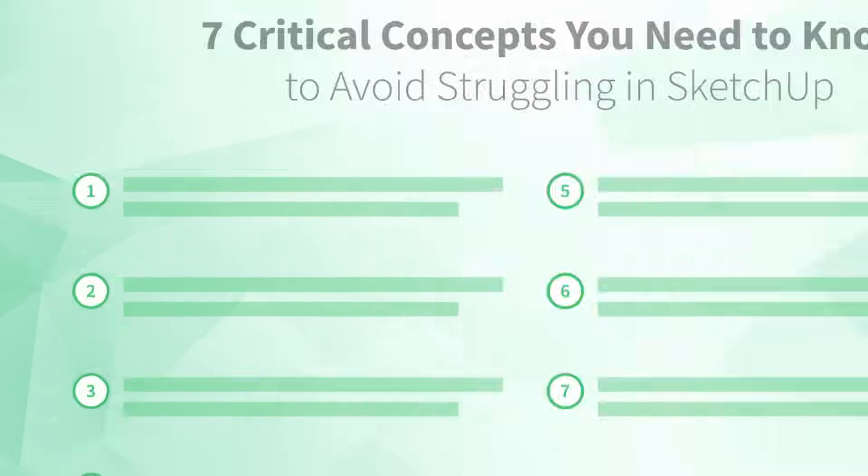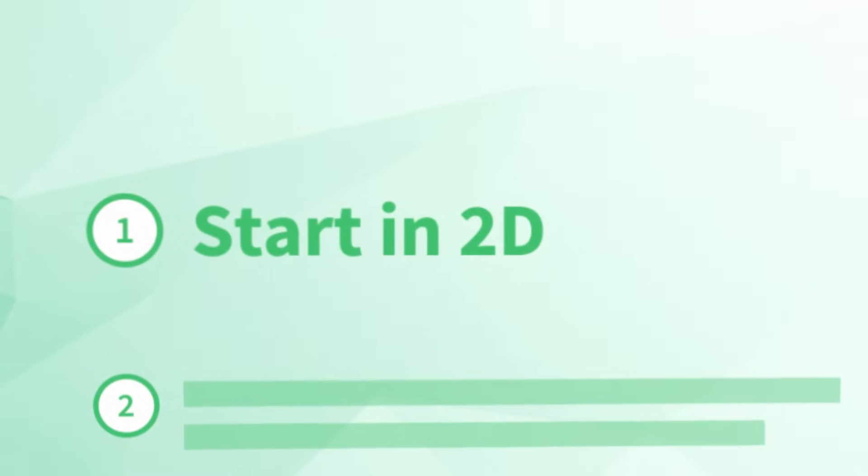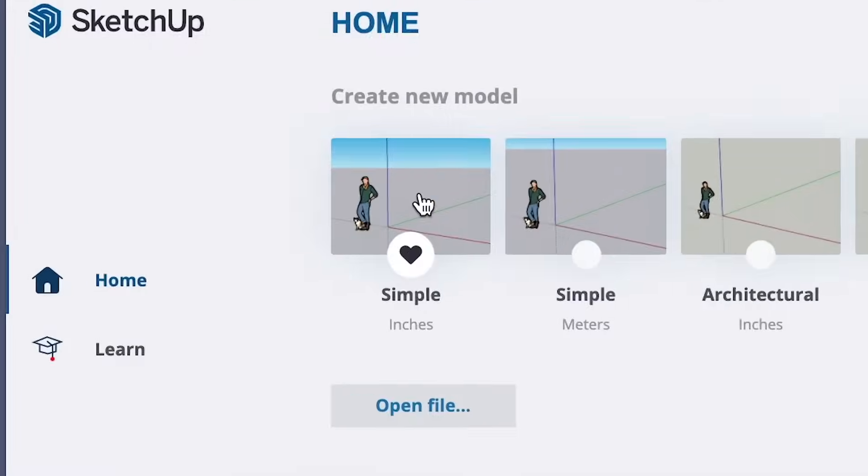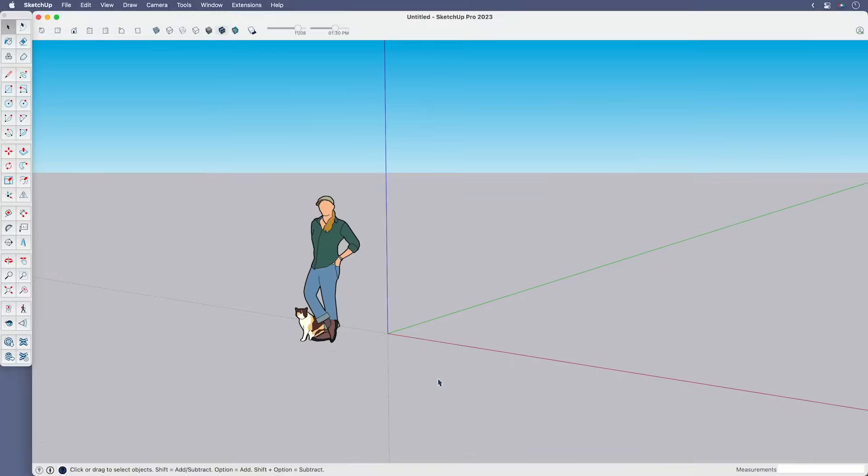Ready to jump in? Let's get started with number one, start in 2D. When you first open SketchUp, you're likely to choose a template that starts you off in an isometric or 3D view. In fact, most tutorials you'll find online start you off in this very same template. But here's the problem. Starting in 3D is like forcing you to jump into the deep end before you know how to swim. You'll be more likely to get frustrated and quit.